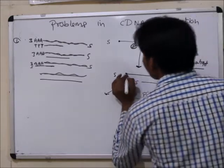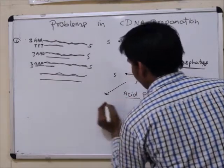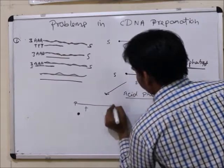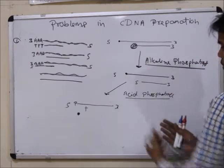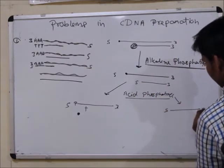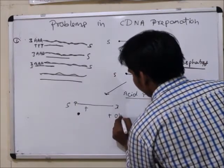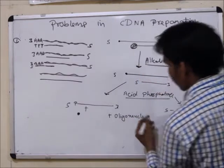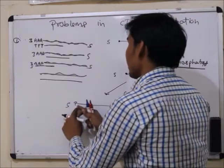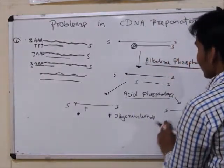The next enzyme — acid phosphatase — removes the oligocap along with its phosphate but leaves one phosphate remaining at the 5' end. So after this step, full-length cDNA has one phosphate at the 5' end, and the 3' end has no phosphate. Since short fragments already lost their phosphate from alkaline phosphatase treatment, acid phosphatase does not act on them. Then oligonucleotides are added: oligonucleotide attachment is possible only where phosphate is available at the 5' end, and not possible where phosphate is absent.